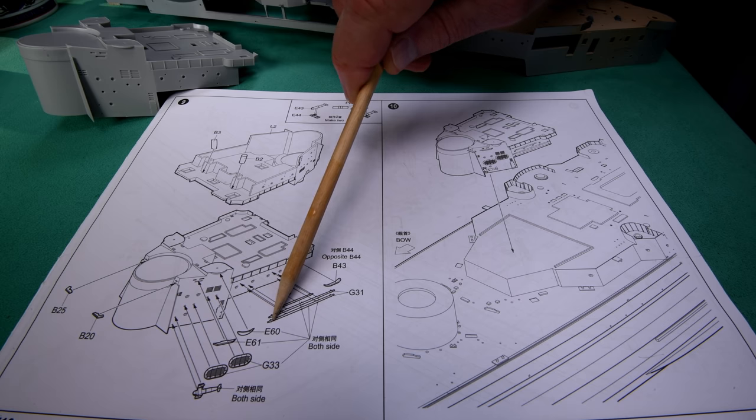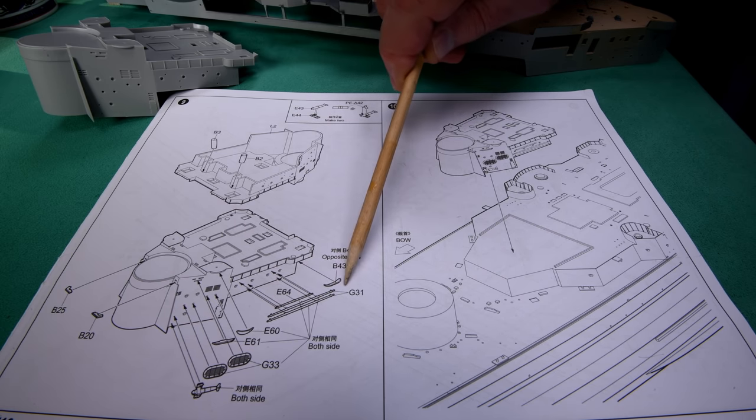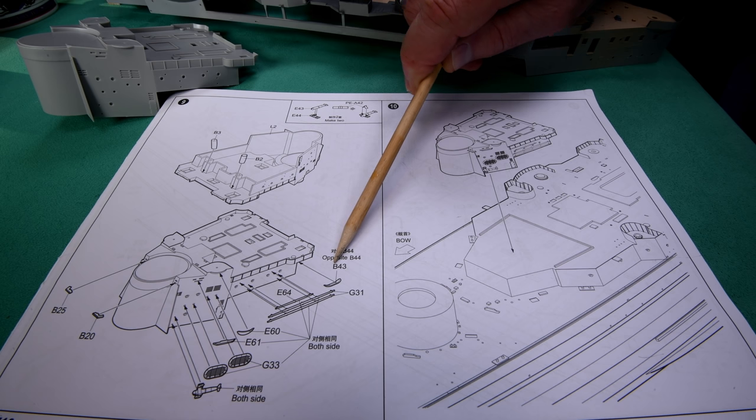We need the E sprue, the G sprue, and the B sprue.